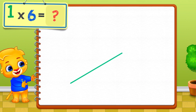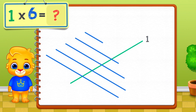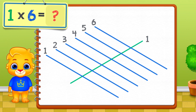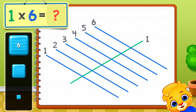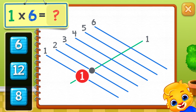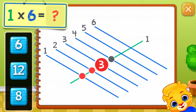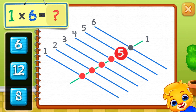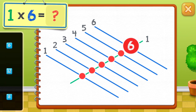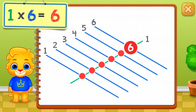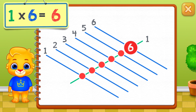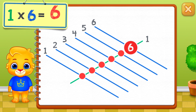One times six equals — one, two, three, four, five, six. One times six equals six.